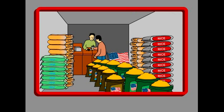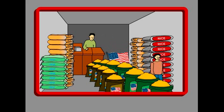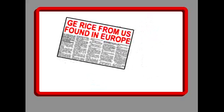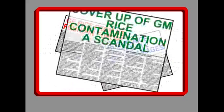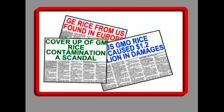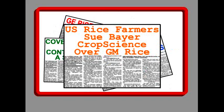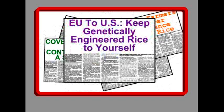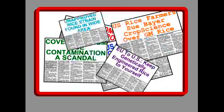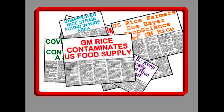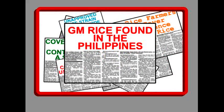In 2006 and 2007, unapproved Liberty Link rice from the US — only ever grown in trial plots — contaminated seed stocks and rice fields in the US, and rice supplies to different parts of the world. Some countries banned rice imports from the US, and American farmers lost millions of dollars due to this contamination. All these incidents just prove how impossible it will be to prevent the contamination of our fields and food supplies by GE crops.